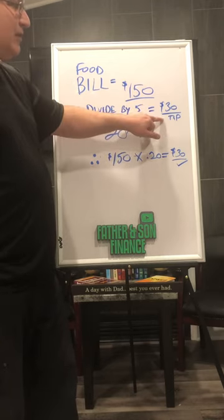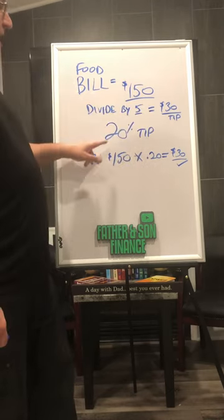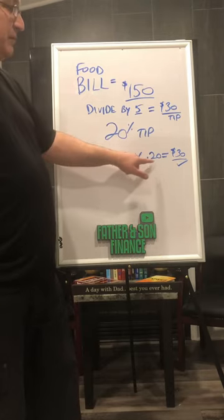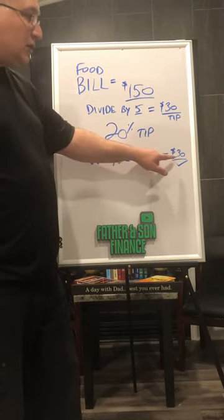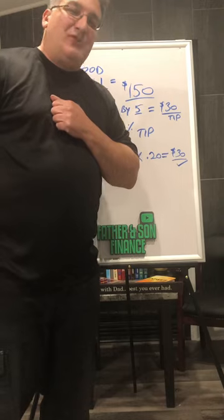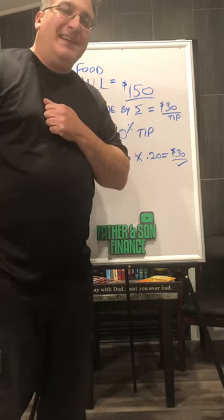150 divided by 5 is 30 bucks. Basically, that's 150 times .20 is 30 bucks. Anytime you divide by 5, you got your 20% tip.